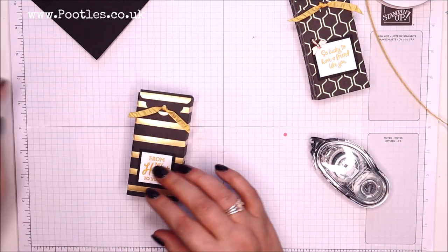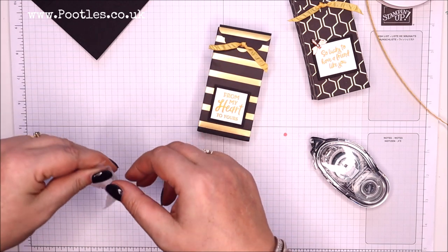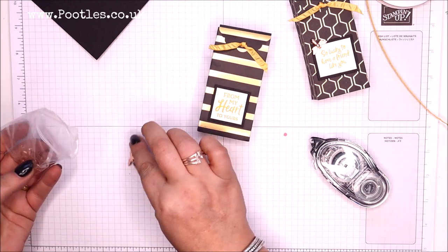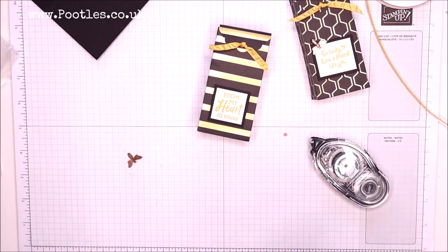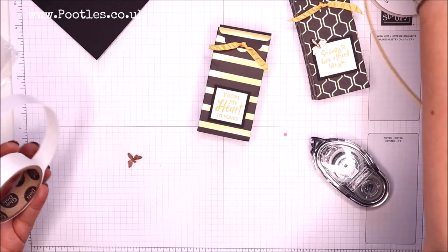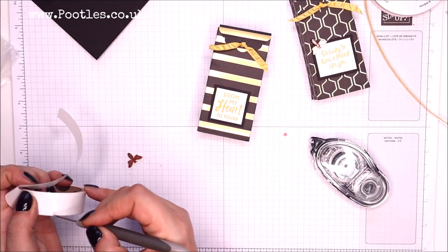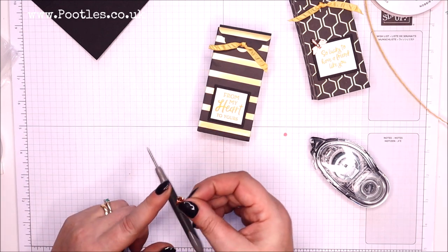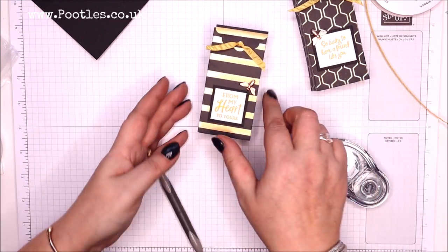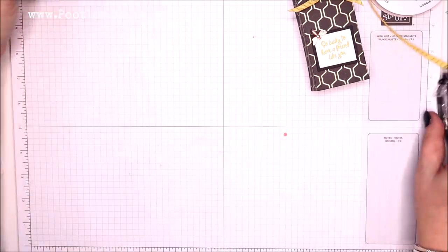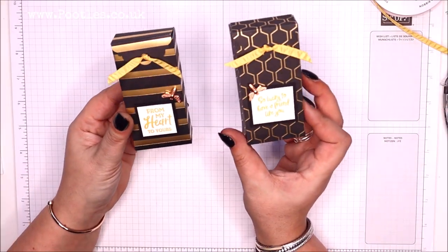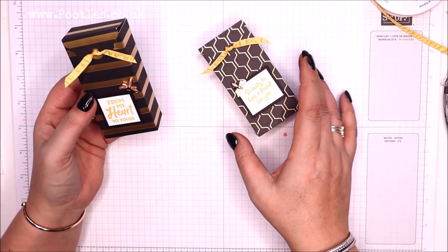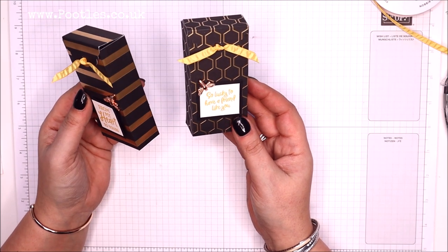From the last project I showed you the beads that are in the Botanical Prints product medley and I love them. So I left them out when I was making this project and thought I will use them again. From my heart to yours, just on there. Super cute. Little scallop tag topper punch box. Love it.